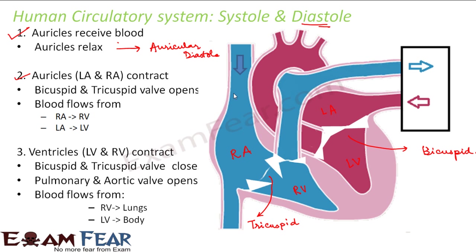When these valves open, blood starts flowing from the right auricle to the right ventricle, and then the valve closes so the blood remains in the right ventricle. Similarly, when the bicuspid valve opens, blood flows from the left auricle to the left ventricle, and once the blood flows in, the valve closes. So in step two: both auricles contract, bicuspid and tricuspid valves open, and blood flows from right auricle to right ventricle and from left auricle to left ventricle.